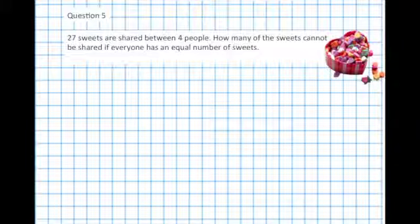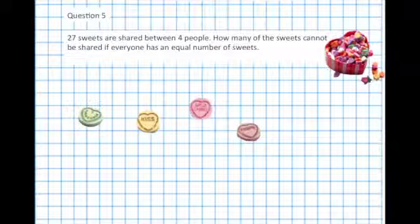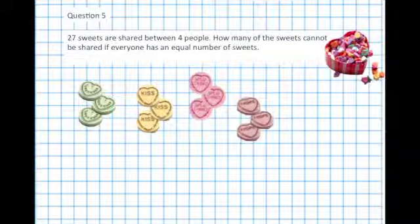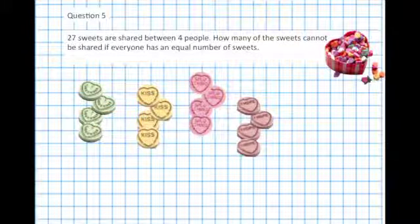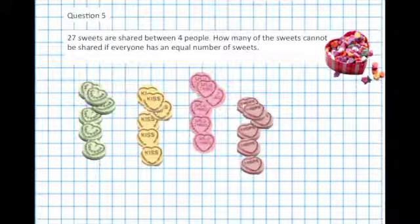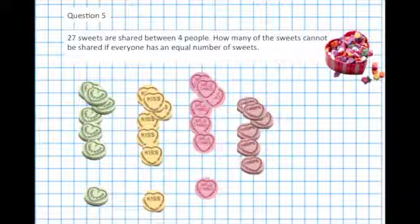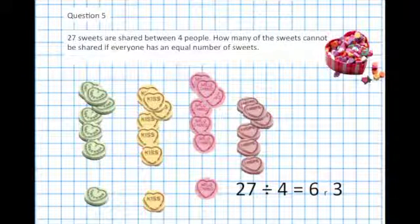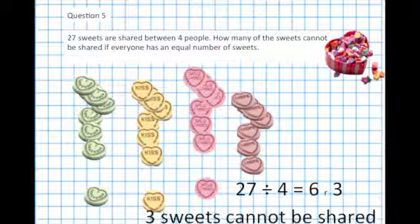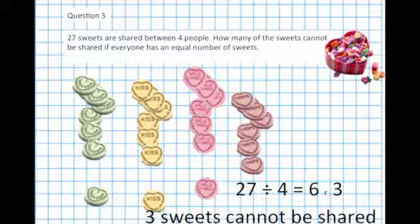How many of the sweets cannot be shared if everyone has an equal number of sweets? 4, 8, 12, 16, 20, 24, and I've got 3 sweets left over. 27 divided by 4 is 6, remainder 3. And the remainder is the sweets that cannot be shared. Three sweets cannot be shared.